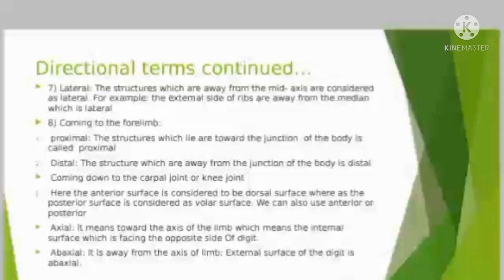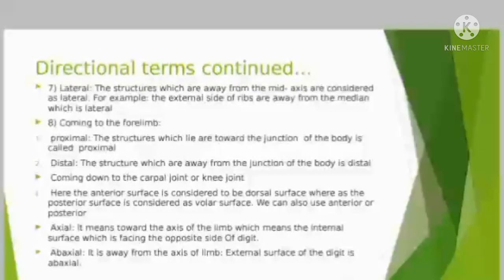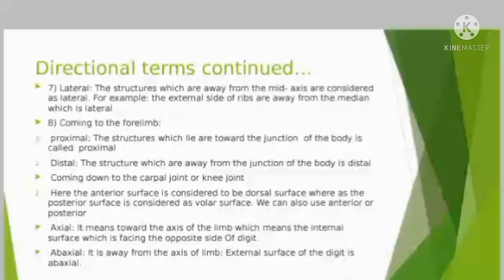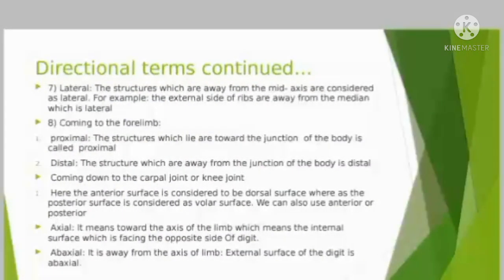Two more terms are axial and abaxial. Axial means towards the axis of the limb, referring to the internal surface facing the opposite side of the digit. Abaxial means away from the axis of the limb — the external surface of the digit is abaxial.